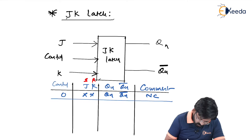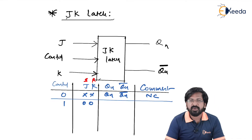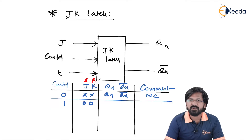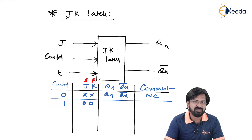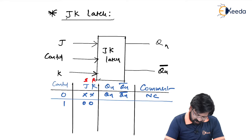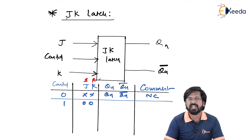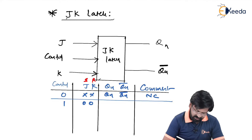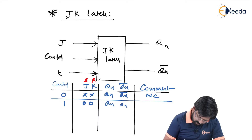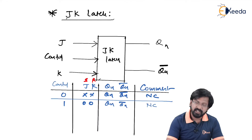When control input equals 1 and J and K are 0 0 — if you remember, in SR latch when S and R are 0 0 it is considered no change condition. Same here, JK behaves almost like SR with minor differences. When J and K are equal to 0 0, again Qn remains Qn and Qn bar remains Qn bar. This is what we call no change condition.